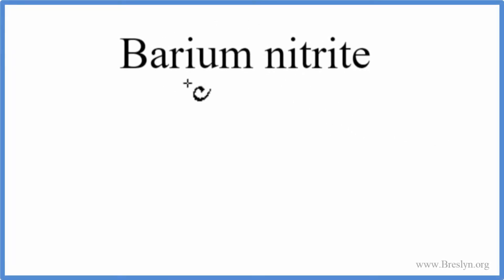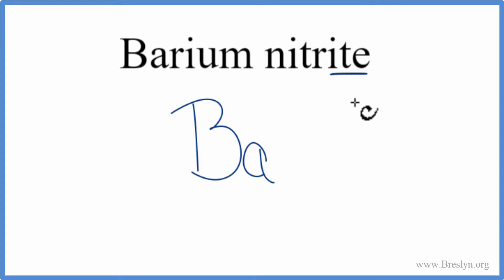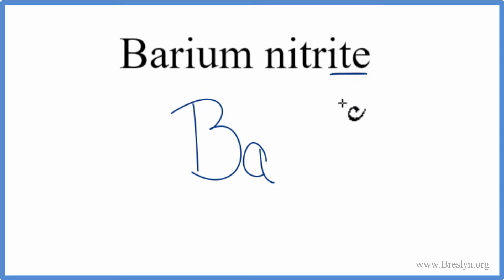To write the formula for barium nitrite, we look up barium on the periodic table — that's Ba — and then we look up nitrite, but not on the periodic table, because nitrite ends in I-T-E. That means it's a polyatomic ion, so you either memorize that or look it up on a table of common polyatomic ions.